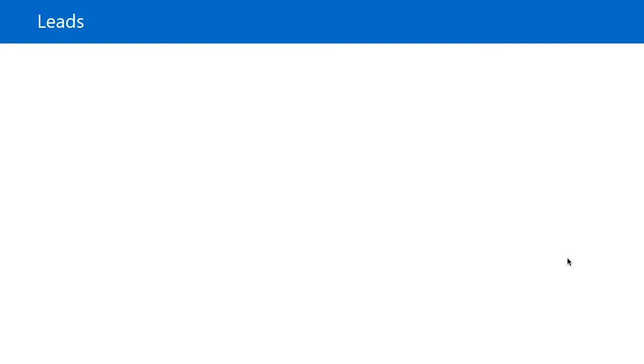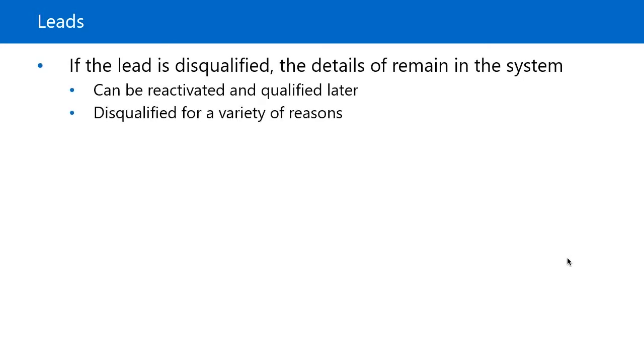So what does the qualification process look like? The first thing to note is that when it's determined that a lead is not interested in the company's products or services, the lead should be disqualified. If the lead is disqualified, the details of the lead remain in the system. That way, if you make a mistake or they change their mind, the lead can be reactivated and qualified later.